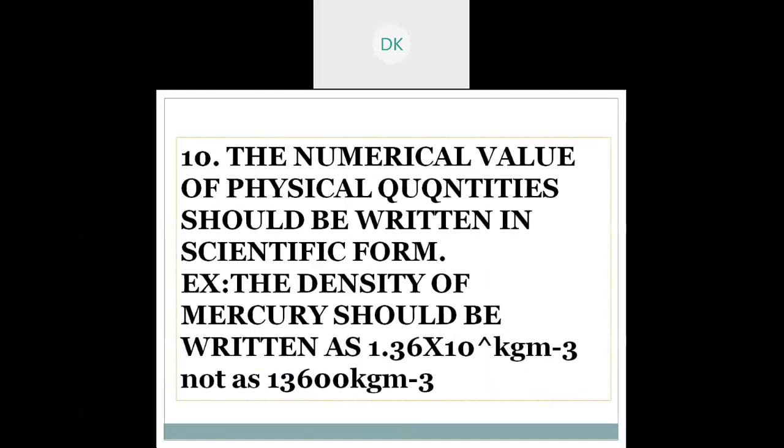Tenth rule of the SI system is: the numerical value of physical quantities should be written in scientific form. Thus the density of mercury should be written as 1.36 into 10 power of 3 kg meter per cube. See, this is the type of formation. We should not write as whole digit number, like 13,600 kg meter per cube. It should be written in the scientific form along with the unit prefix.